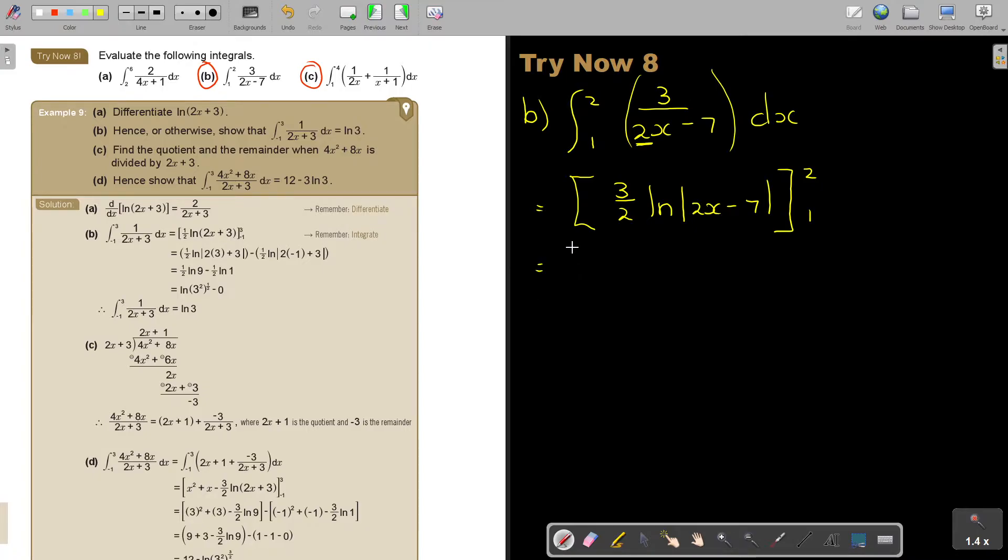Now I'm going to substitute. So first I substitute. I'm going to leave my bars, and it's 2 times 2 minus 7, minus, and then it's 3 over 2 ln 2 times 1 minus 7. And that's 3 over 2 ln, and now it's that negative 3, and that's why the bars are there.